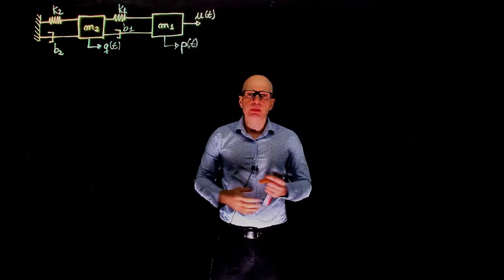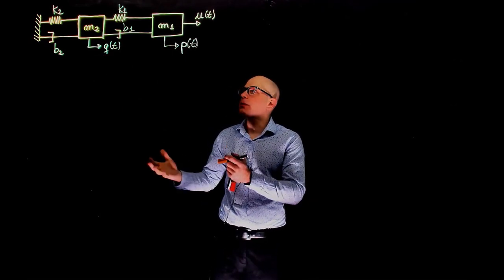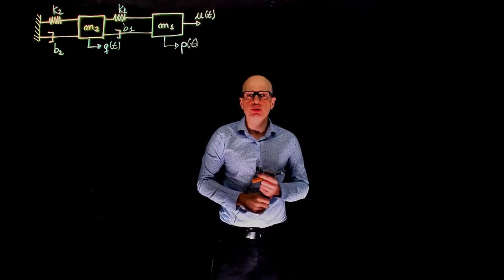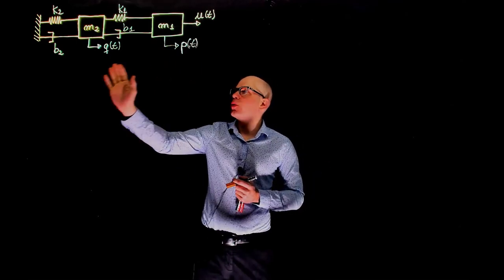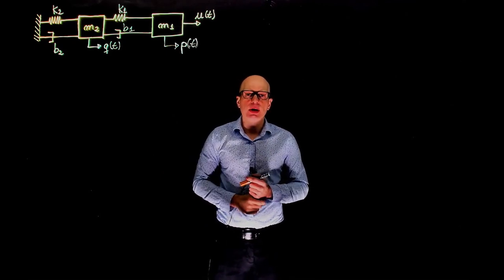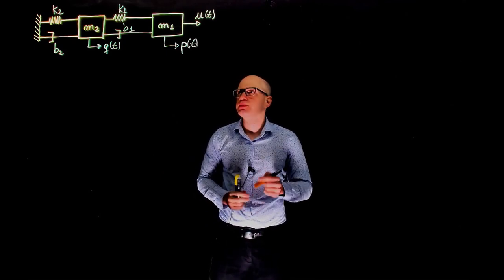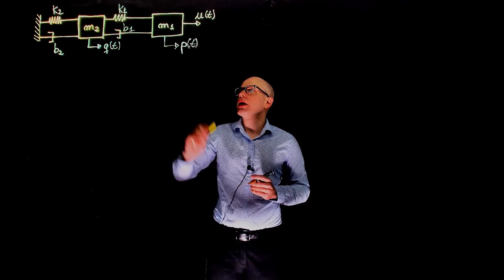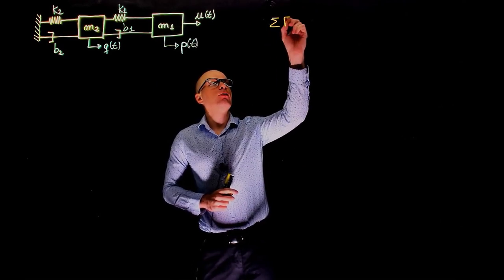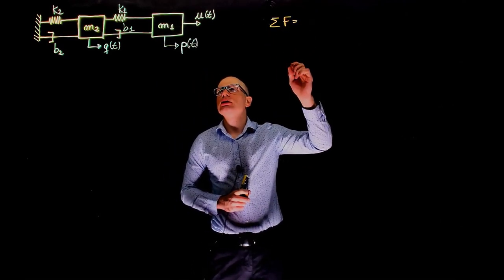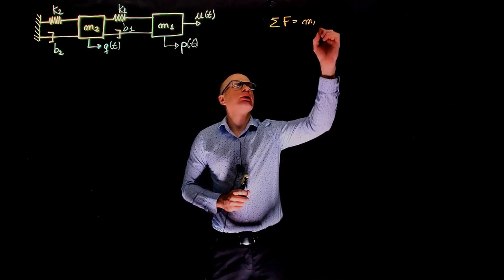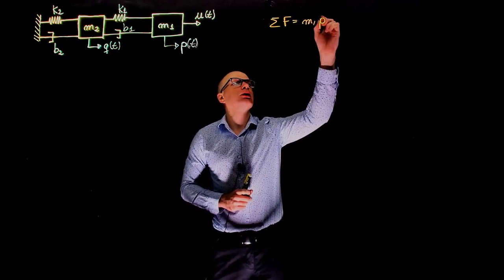The first step in this process is to create the dynamic model for this system. We are going to split that into a set of two equations — one equation for m1 and one equation for m2, the same way we did in lecture 2. Let's start with mass m1. For mass m1, we know that the sum of all forces applied to it is equal to mass m1 times its acceleration, that is, p double dot.